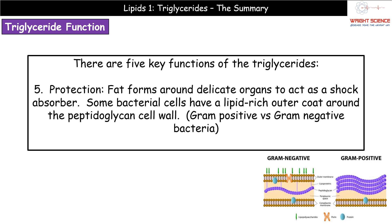The fifth and final function is protection. We've got a range of organs in our body not actually protected by the skeleton, but these organs are still delicate and essential to life. So we have a layer of fat around those delicate organs so that if there's a knock in that region, the fat acts as a shock absorber protecting the delicate tissue underneath. Even bacterial cells have got in on this - some have a lipid-rich outer coat around their peptidoglycan cell wall, which is the difference between gram-positive and gram-negative bacteria: one has this outer coating to help protect it, the other does not.